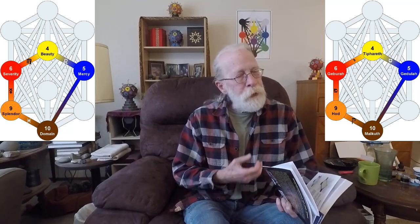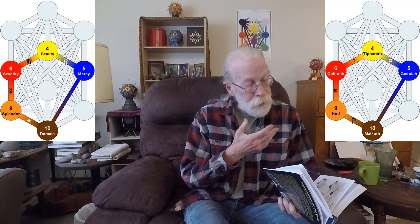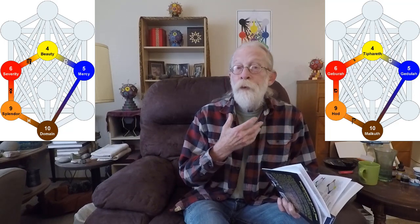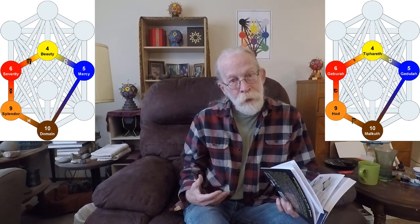Follows Pisces to Malkuth, takes that hidden path up to Gedjula, takes the path of Leo to Tiferet and the path of Virgo down to Geburah, and then Mercury down to Hod.